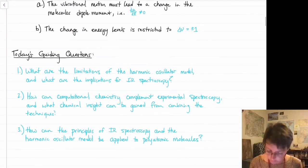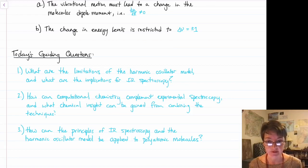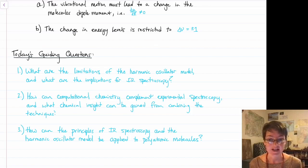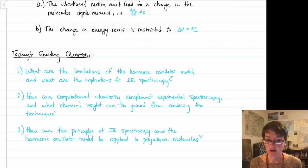Three questions will guide today's discussion. First, the harmonic oscillator model is not perfect - we want to understand its limitations and the implications for IR spectroscopy. Second, what chemical insight can we gain through computational chemistry calculations, and can it help us understand IR spectroscopy? And third, up until now we've restricted discussion to diatomic molecules - we want to apply these principles to polyatomic molecules.